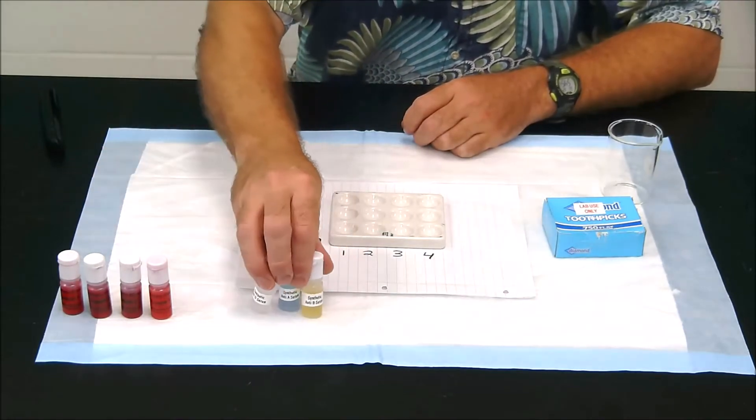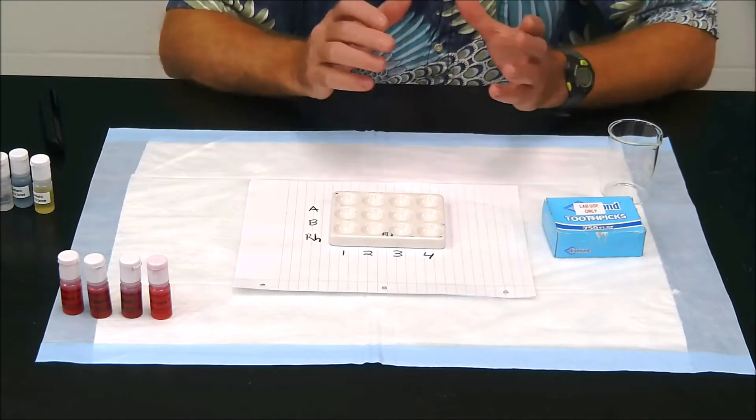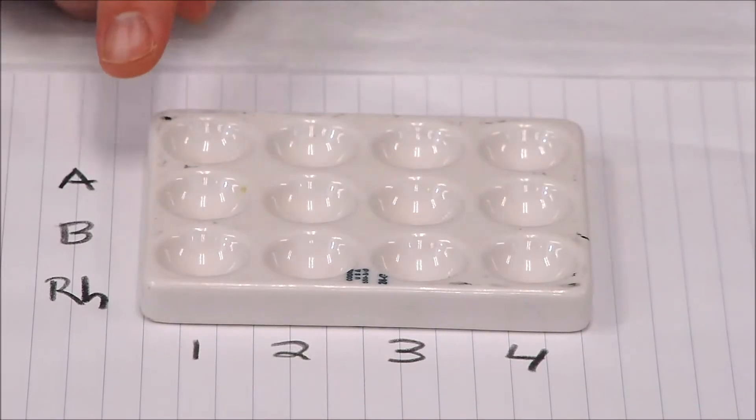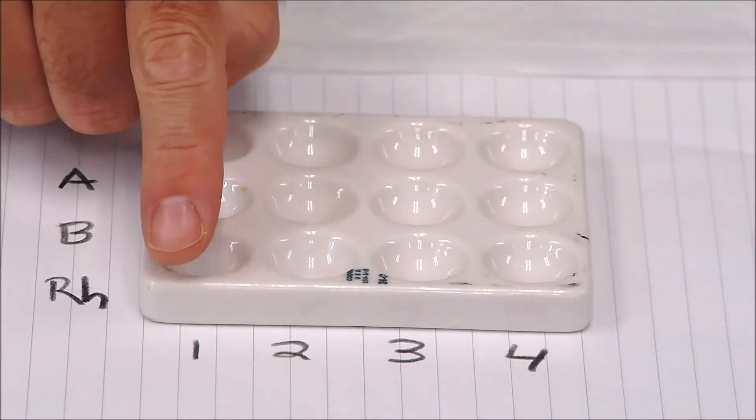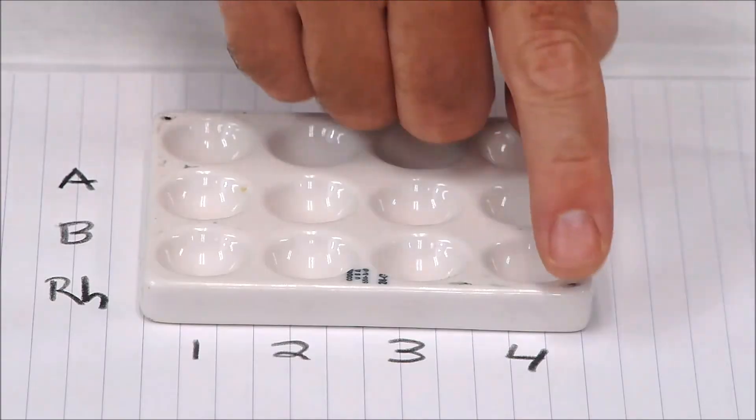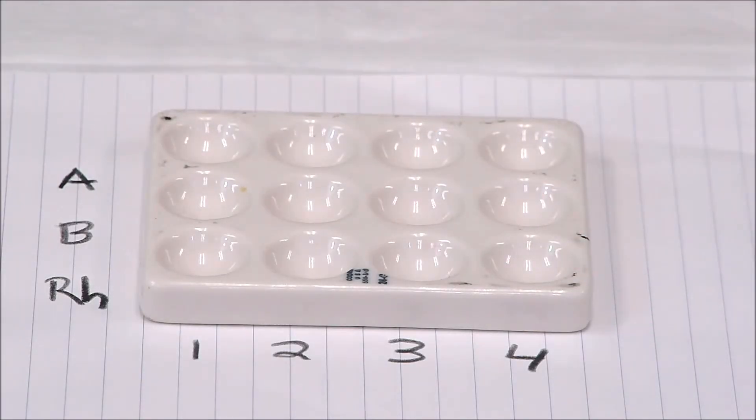So what we're going to do first is go ahead and label the wells of our blood typing plate. What you can see here is we already have those wells labeled, so we have sample one, sample two, sample three, and sample four. These will be our mystery blood samples.